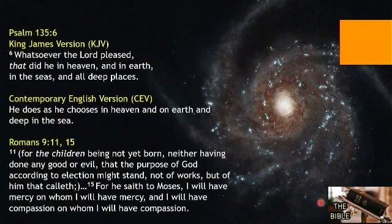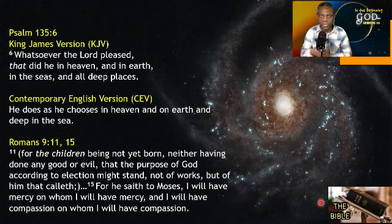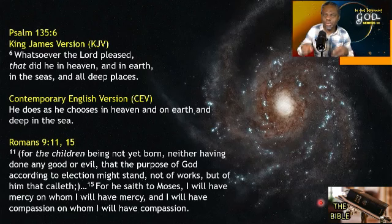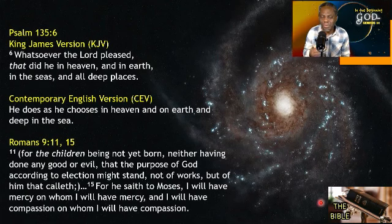Let's read Romans chapter 9, verses 11 and 15. This is about when God called Isaac and Rebekah. Rebekah was carrying twins, and the Bible says: for the children being not yet born, neither having done any good or evil, that the purpose of God according to election — according to his choice — might stand, not of works but of him that calls. Verse 15: I will have mercy on whom I will have mercy, and I will have compassion on whom I will have compassion.